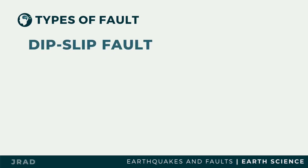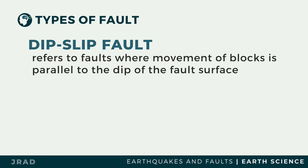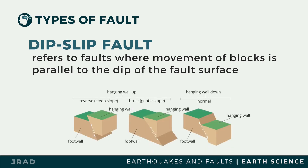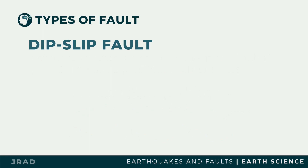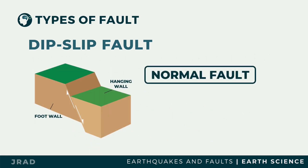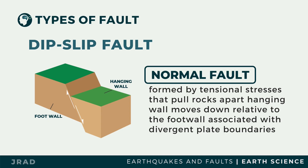Faults can be classified as dip-slip or strike-slip. Dip-slip faults are further classified as normal or reverse. A dip-slip fault refers to faults where movement of blocks is parallel to the dip of the fault surface. Imagine dip-slip faults as inclined fractures where the block moves vertically upward or downward. If the block above the fault line moves down, the fault is termed normal.